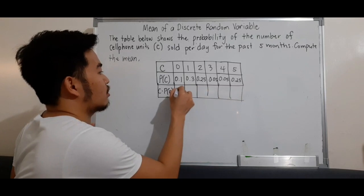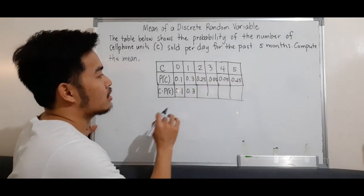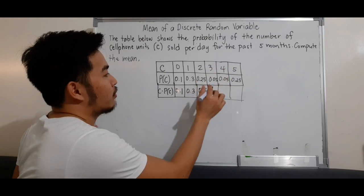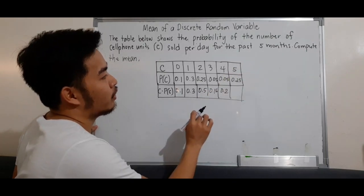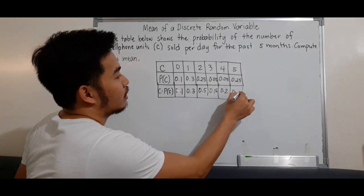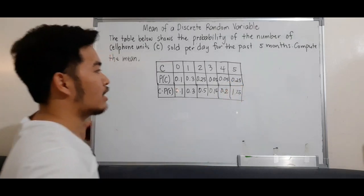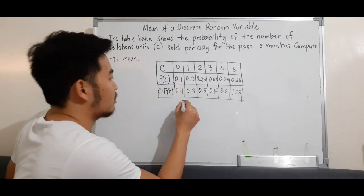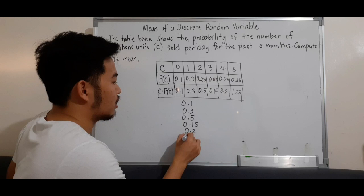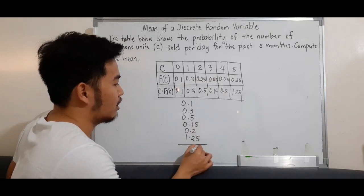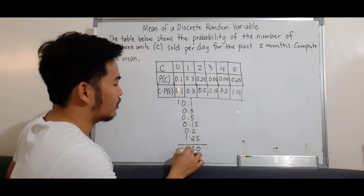So c times P(c). We multiply c by P(c) and add them all. 0 times 0.1 equals 0. 1 times 0.3 equals 0.3. 2 times 0.25 equals 0.5. 3 times 0.05 equals 0.15. 4 times 0.05 equals 0.2. And 5 times 0.25 equals 1.25. Then we add all of these: 0.1 plus 0.3 plus 0.5 plus 0.15 plus 0.2 plus 1.25 equals 2.5.